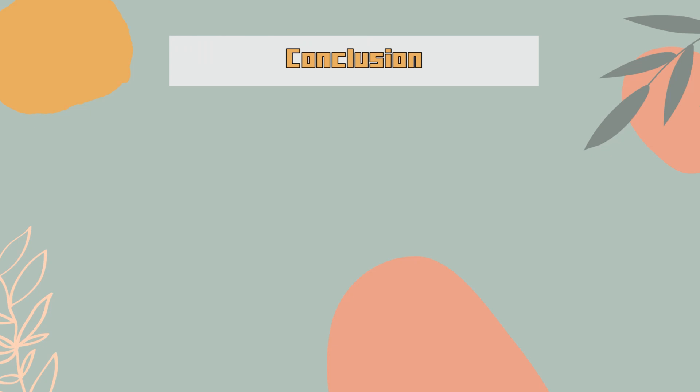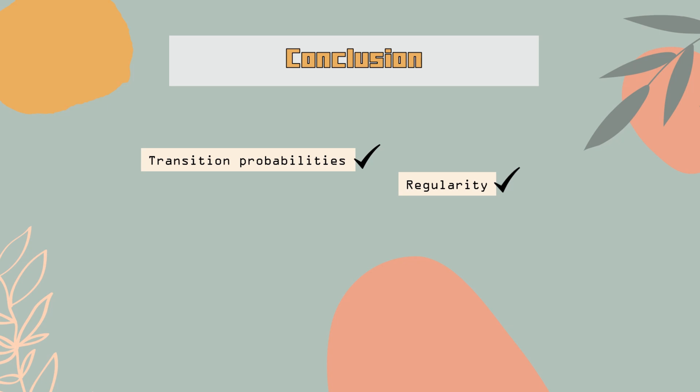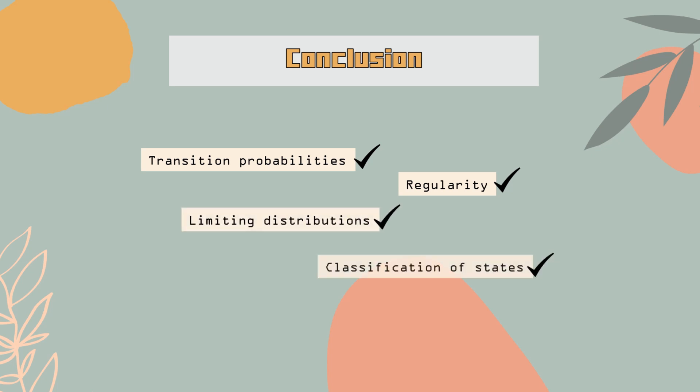In conclusion, from general theorems regarding Markov processes, the transition probabilities, regularity, limiting distributions, and classification of states can all be inferred.